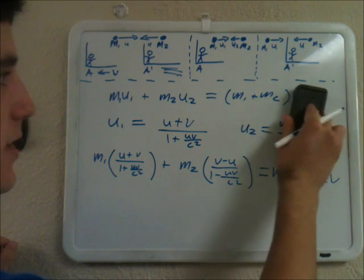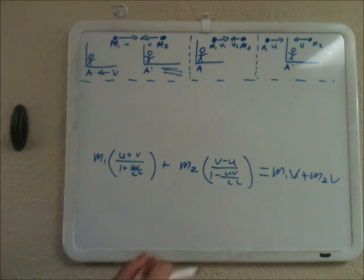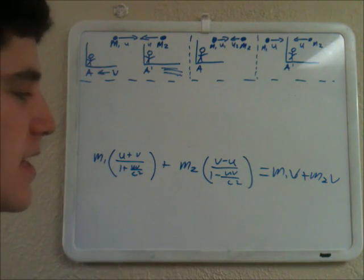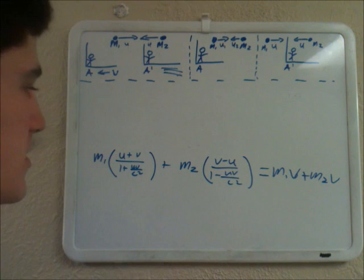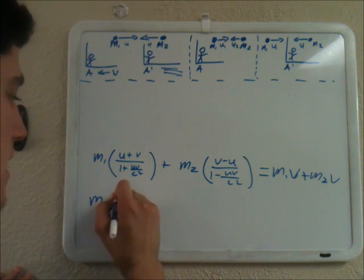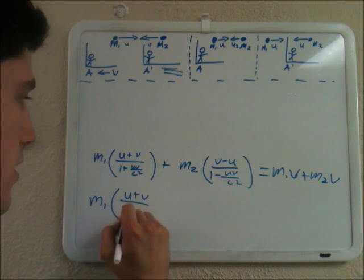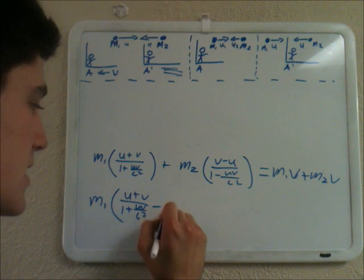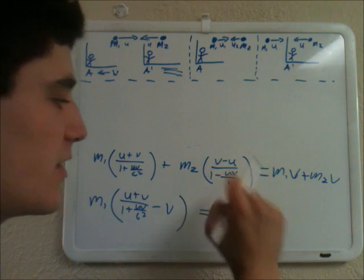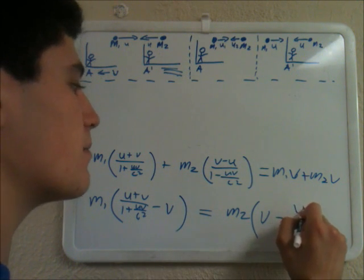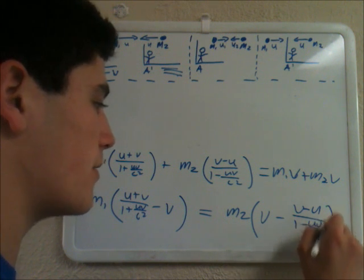Keep this in mind — I'm going to erase this now to do some more math. We're going to subtract m1·v from both sides and subtract m2 times the second quantity from both sides, getting the m1 terms on one side and m2 on the other. This gives m1·[(u + v)/(1 + uv/c²) − v] = m2·[v − (v − u)/(1 − uv/c²)].